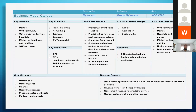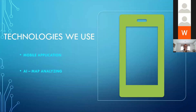This is our business model canvas. It has key partners, cost structures, and revenue streams. I'm going to request Ramdol to describe about the technologies we are using in our app.